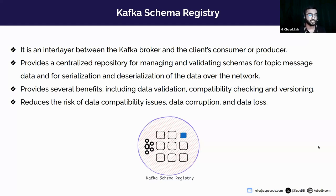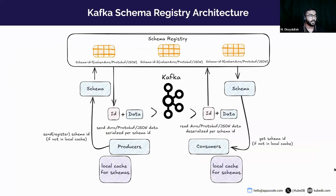Now let's look at the Kafka schema registry architecture. Let's assume we have a schema registry cluster and a Kafka cluster, and we want to produce some messages to Kafka using a schema. A schema can be Avro type, Protobuf type, or JSON type — it can be any of the three. When any producer wants to produce a message to Kafka using a schema, the producer will request with this schema, and it will first try to find it in the local cache.